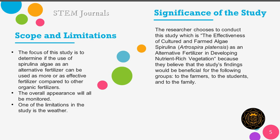For the scope and limitations, the focus of this study is to see if spirulina algae may be utilized as an alternative fertilizer that is just as successful or more effective than other existing fertilizers such as animal manure, cabbage fertilizer, and commercial fertilizer. Before and after applying the fertilizer, the overall appearance of the plant such as color and height will be monitored. One limitation of the study includes the weather, as it may have affected the plants.